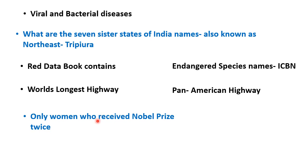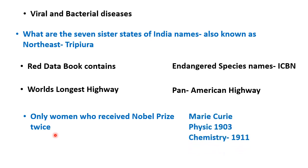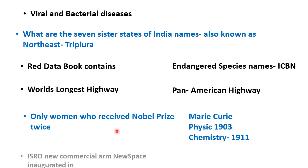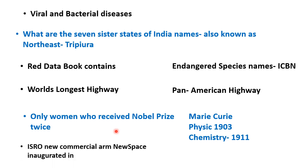Only woman who received Nobel Prize twice — Marie Curie को दो बार Nobel Prize मिला: एक बार 1903 में Physics में, और एक बार 1911 में Chemistry में। ISRO का नया commercial arm — जिसका नाम है NewSpace India — inaugurate हुआ है Bangalore में।